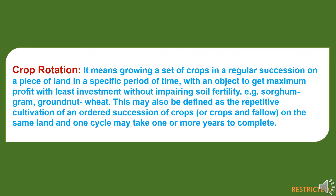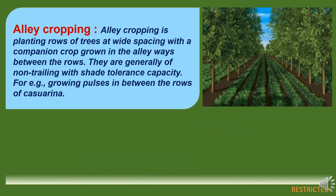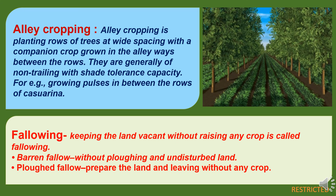Crop rotation means growing a set of crops in a regular succession on a piece of land in a specific period of time with the object to get maximum profit with least investment without impairing soil fertility. For example, growing sorghum, gram and groundnut-wheat. This may also be defined as the repetitive cultivation of an ordered succession of crops or crops and fallow on the same land; one cycle may take one or more years to complete. LA cropping is planting rows of trees at wide spacing with a companion crop grown in the alley wedge between the rows, generally non-trailing with shade tolerance capacity. Example: growing pulses in between the rows of Kejruna tree.